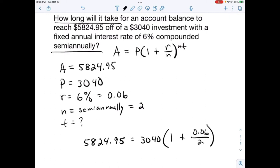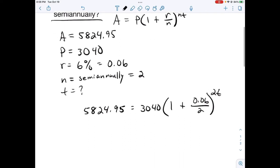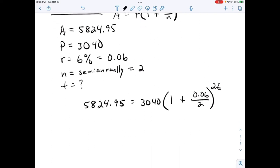What I normally like to do is combine everything inside the parentheses, or you can divide both sides. Let's divide out the principal first. Either way is fine, whichever is comfortable to you. Once we calculate 5824.95 divided by 3040, we get this value.